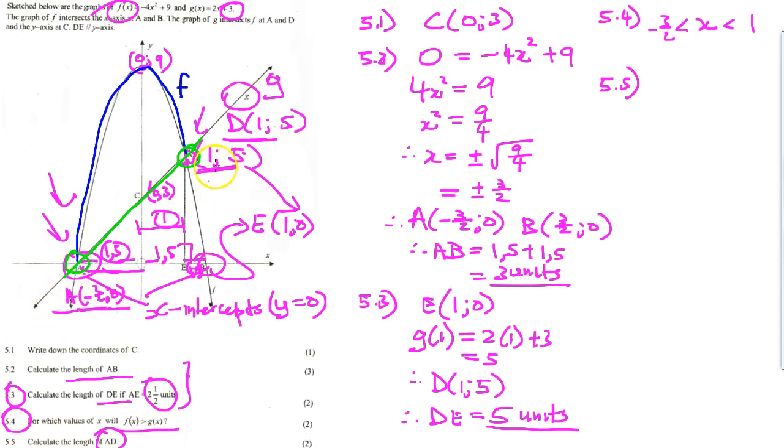E, now remember that DE is perpendicular to the x-axis. So if you look at this, what type of triangle is this here? It's a right-angled triangle, correct? So in a right-angled triangle, if we know two sides we can find the third side using the theorem of Pythagoras. AD is the hypotenuse, isn't it?